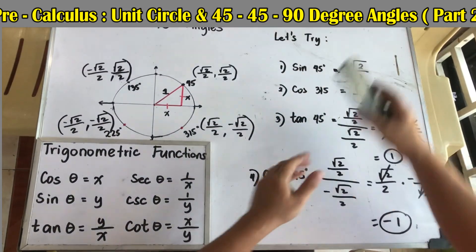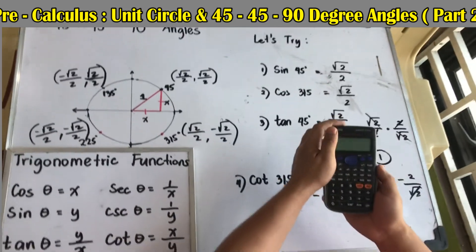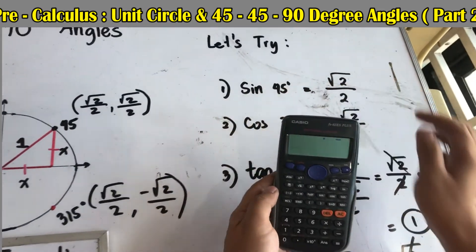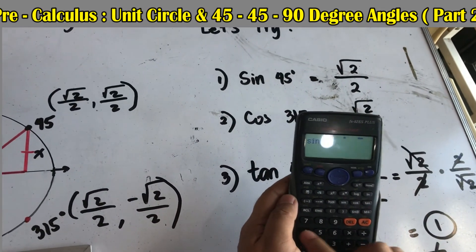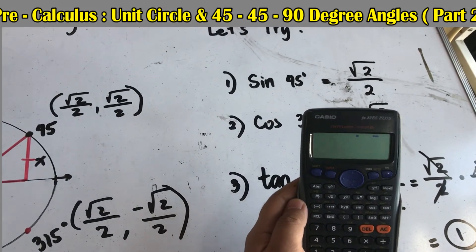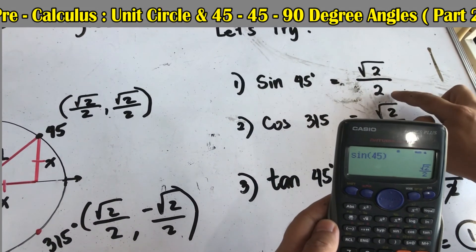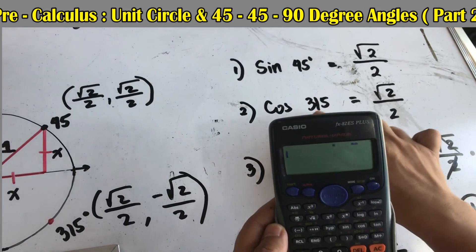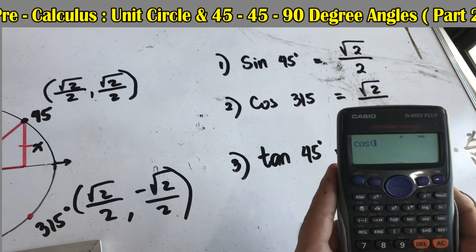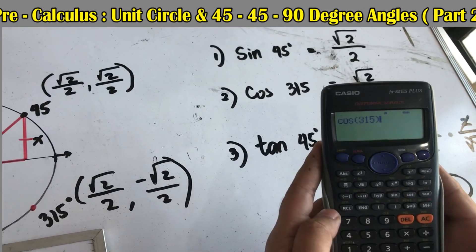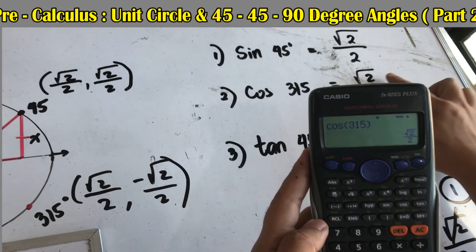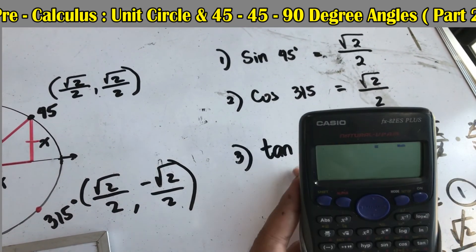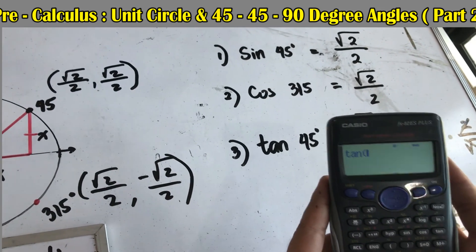Let's verify our answers using a calculator. Sine 45° = √2/2. Cosine 315° = √2/2. Tangent 45° = 1. And cotangent 315° (using shift-tangent 315°) also confirms our answer of −1.